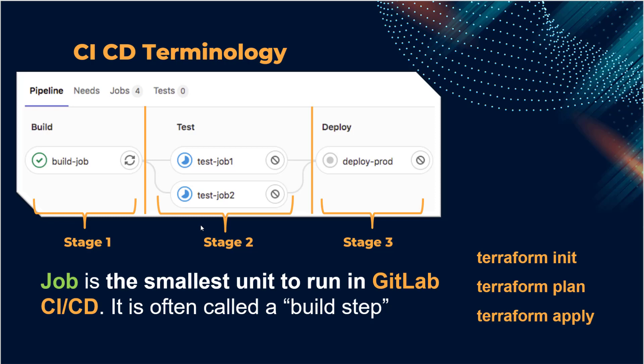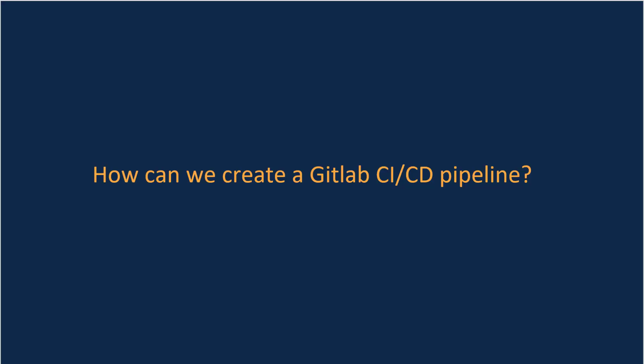So at this point we know what a pipeline is, what a job is, and what stages are. Just understand it like this: we have Terraform code and we want to run terraform init, terraform plan, and terraform apply — three steps, each step is one stage. Theory is enough; it is better to go with practical. So the question comes to mind: how can we create a GitLab CI/CD pipeline? To answer this, let's go to Google and look at the GitLab documentation.